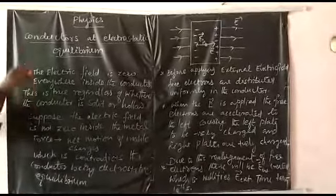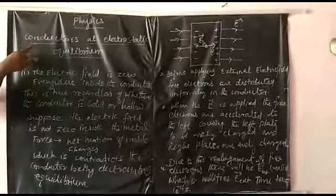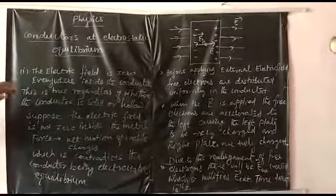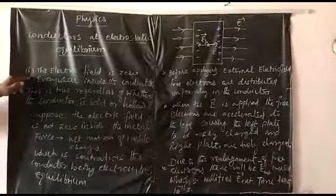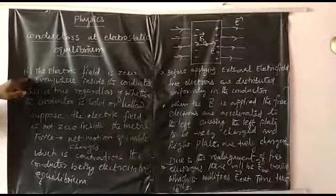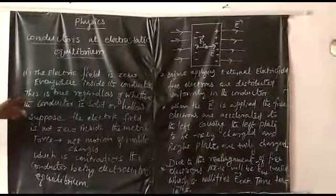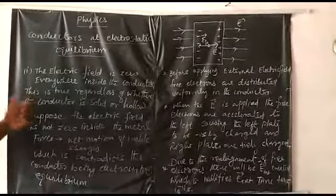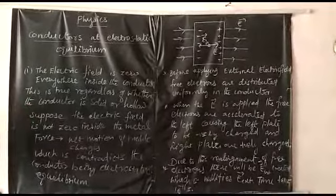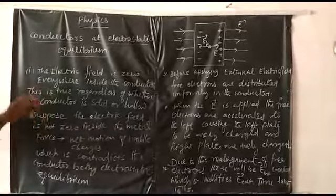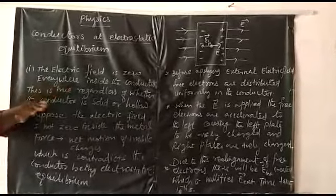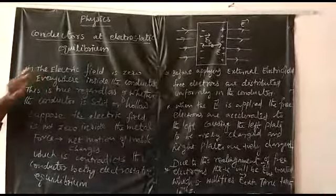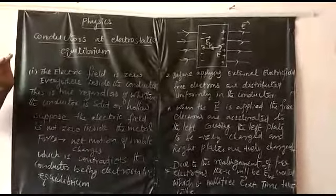Good morning to all. Now we are going to discuss about conductors at electrostatic equilibrium. First property: the electric field inside of the conductor is zero. This is true regardless whether the conductor is solid or hollow. The electric field inside of the conductor is zero — this is called electrostatic equilibrium.